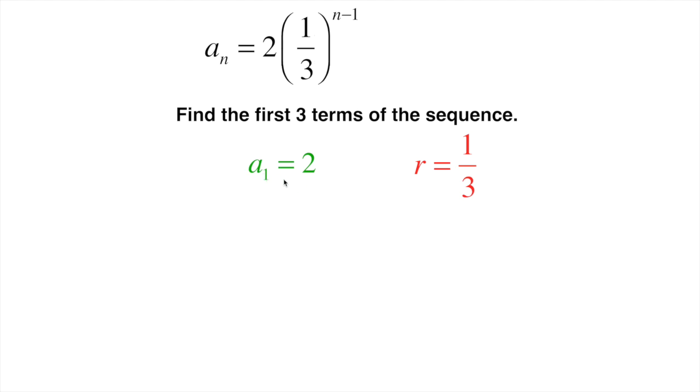So now we know the first term is 2, and we need to figure out the next term. The way we figure this out in a geometric sequence is we're simply going to multiply this term by the ratio to find the following term.